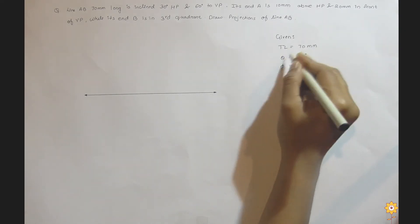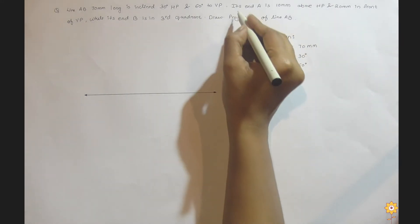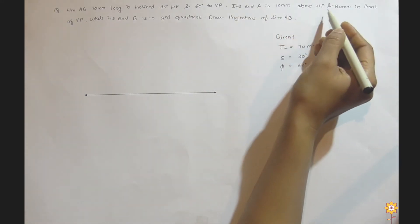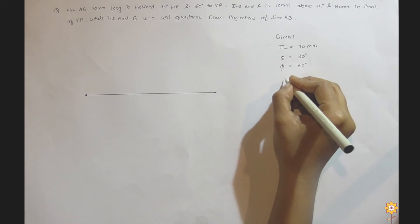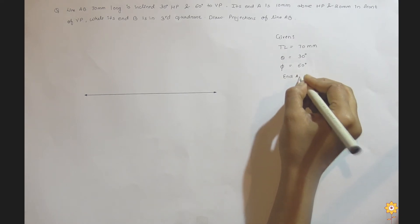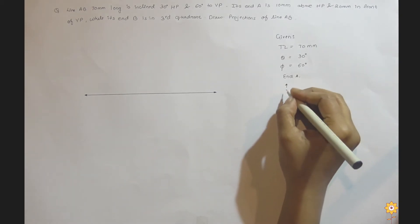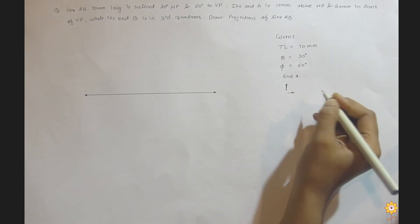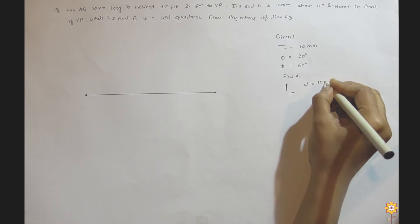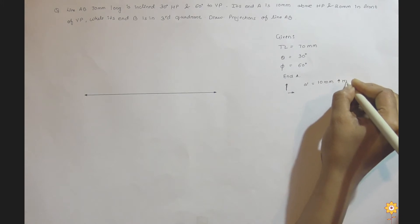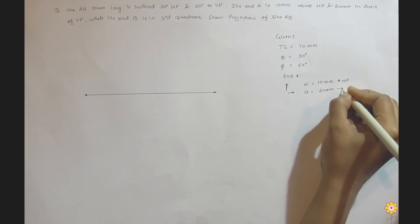Theta is the angle associated with the front view and phi is the angle associated with the top view. Now, its end A is 10 mm above HP and 20 mm in front of VP. End A is 10 mm above HP and 20 mm in front of VP, which denotes that end A is in the first quadrant.